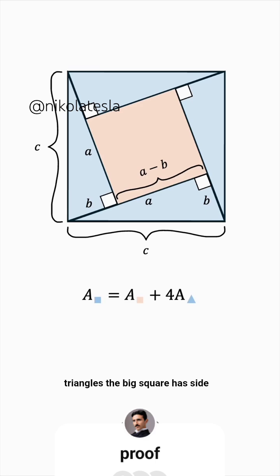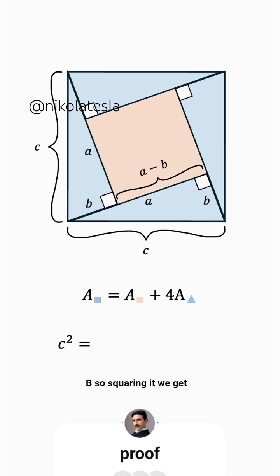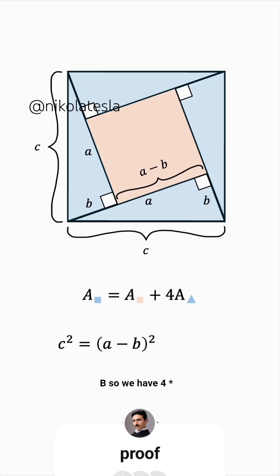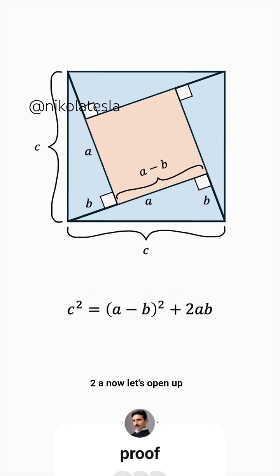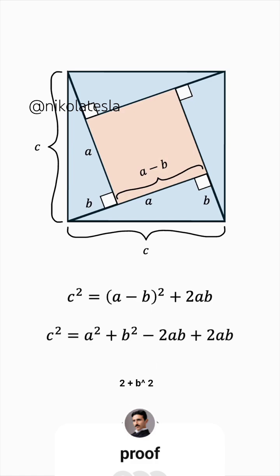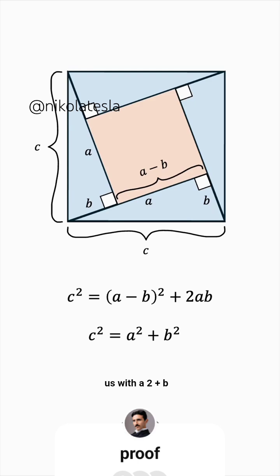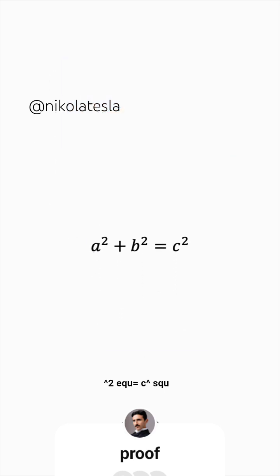The big square has side length C, so its area must be C squared. The inner square has side length A minus B, so squaring it we get its area. Each triangle has area half base times height, where the base and height are A and B, so we have 4 times AB over 2, which simplifies to 2AB. Now let's open up the square — this gives us A squared plus B squared minus 2AB, and this cancels with the plus 2AB, leaving us with A squared plus B squared equals C squared.